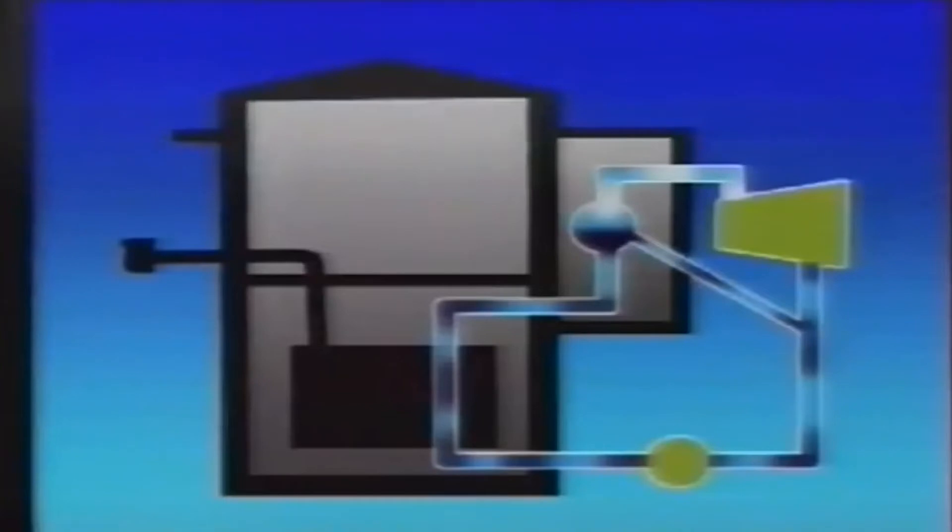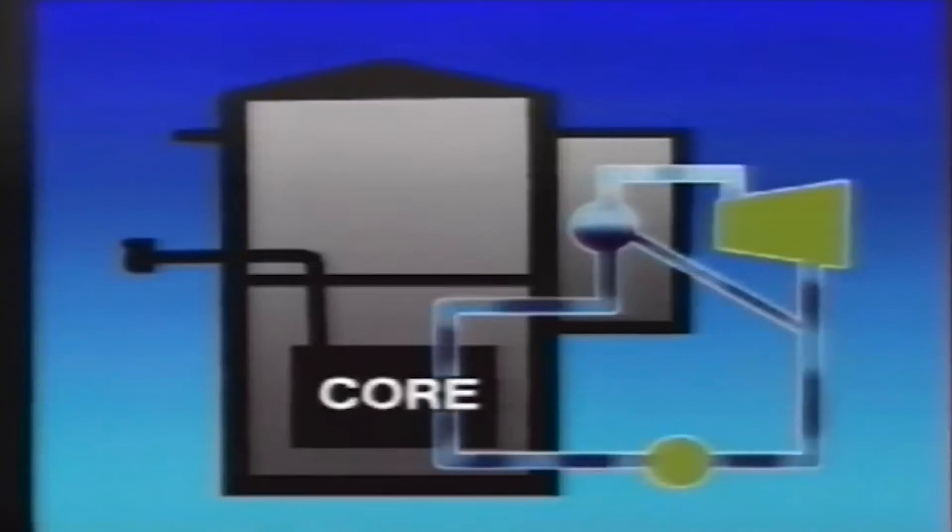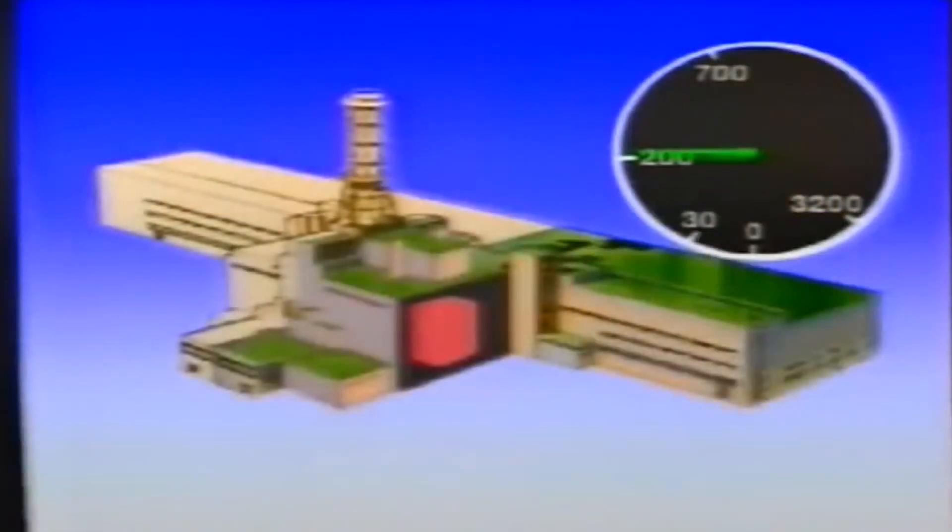An RBMK-1000 produces steam for its turbines by boiling water actually in the reactor, using heat from the fuel elements. The same water circuit also cools the reactor. The water is pumped under pressure around 1661 tubes made of an alloy of the metal zirconium, situated in the graphite core. In any water reactor, the amount of steam affects the tempo of the nuclear reaction. In the RBMK, an increase in steam increases the tempo, which in turn leads to more steam. Under normal operating conditions, this can be coped with by complex control systems. But at low power, and 200 megawatts was low power, the second phenomenon, the positive power coefficient, can occur.